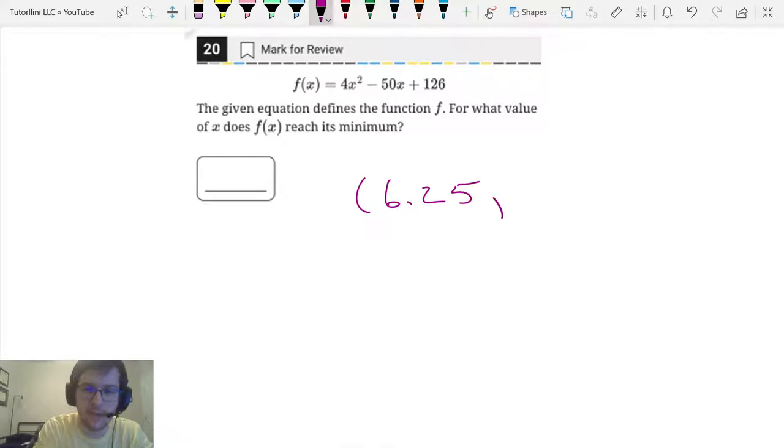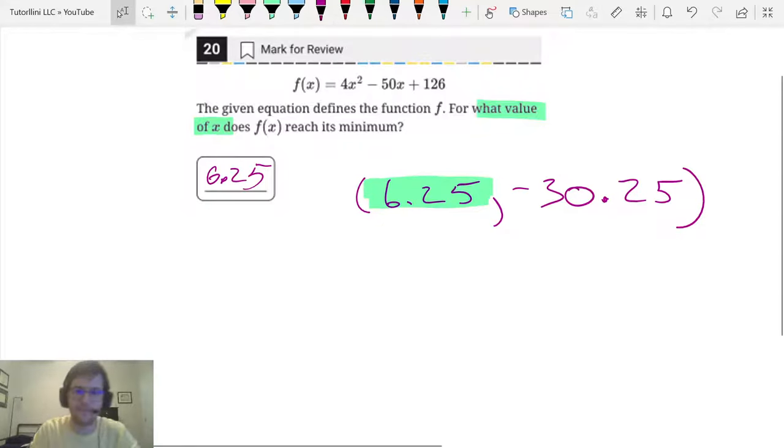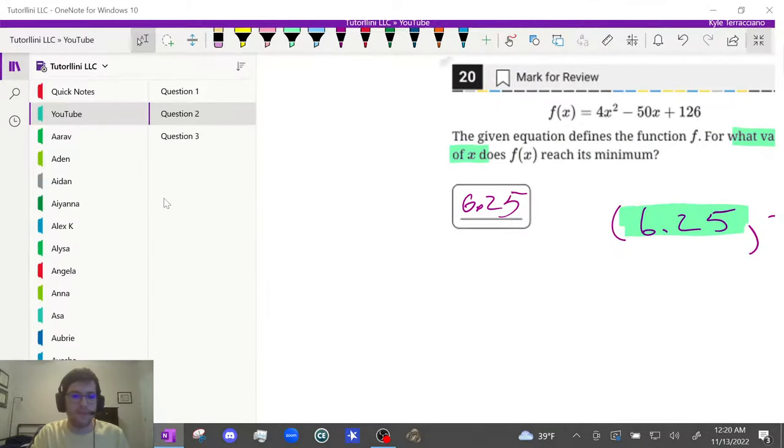6.25 comma negative 30.25. Hopefully I copied that down right. And you see now it says, what value of x does it reach the minimum? So again, we want the x value for this one. So it's 6.25. And that's the answer.